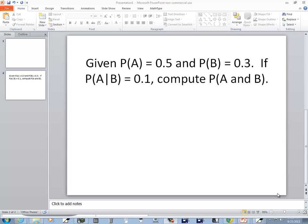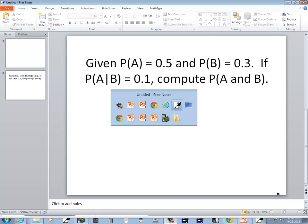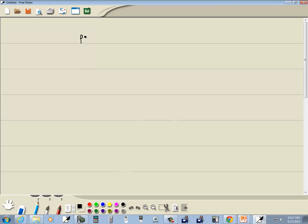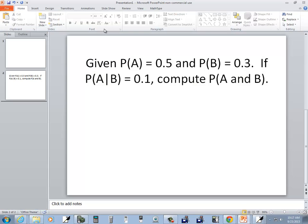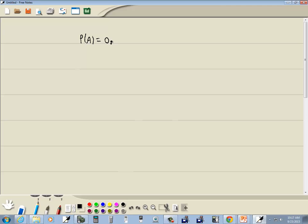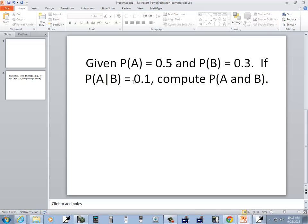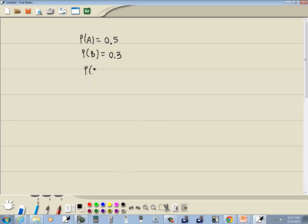Let's take a look at this problem. Given the probability of A is equal to 0.5, and probability of B is equal to 0.3. If probability of A given B is equal to 0.1, then we want to find a probability of A and B.